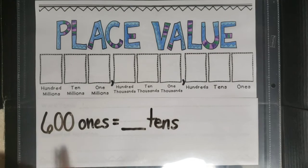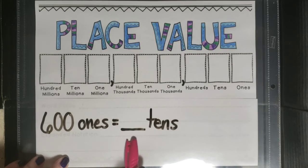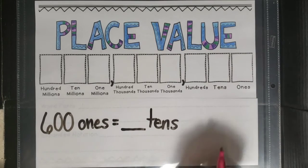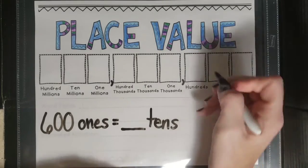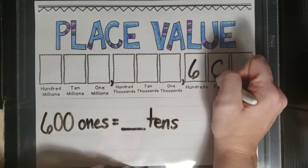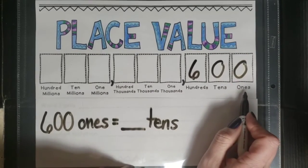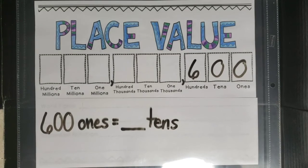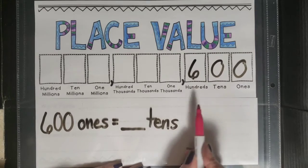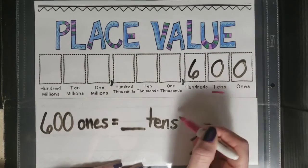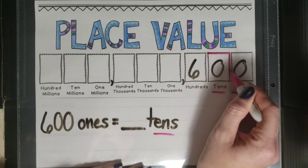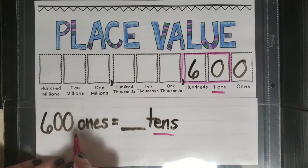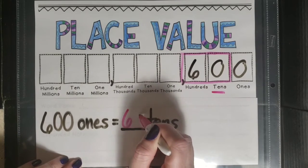We're continuing now with six hundred ones equals an unknown number of tens. Six hundred ones I know is six hundred. I write that on the place value chart. Looking at the tens column, I draw my box and extend to the left. Six hundred ones equals sixty tens.